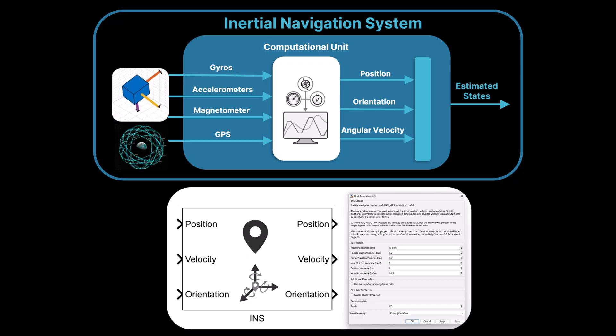To adjust the level of noise in the outputs, you can modify the accuracies of roll, pitch, yaw, position, velocity, acceleration and angular velocity. The accuracy is defined as the standard deviation of the noise.